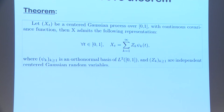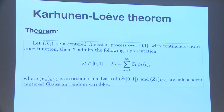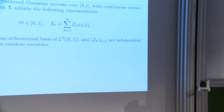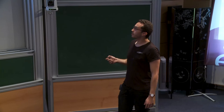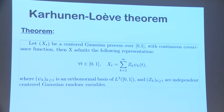Why show the Mercer theorem? Because of the beautiful Karhunen-Loève (KL) decomposition. For a centered Gaussian process depending on time and randomness, this formula completely separates the randomness from the time dependence. You can write the process as a sum of products between random variables and time-dependent functions. For Gaussian processes, the Z_k's are exactly independent Gaussian variables.